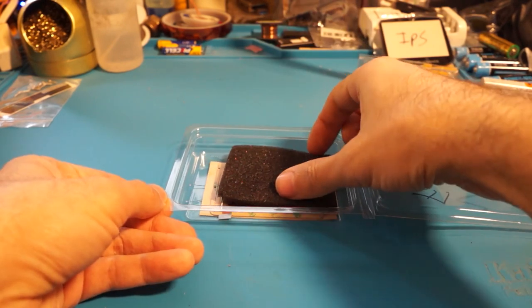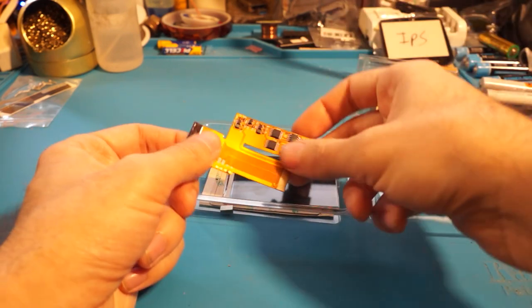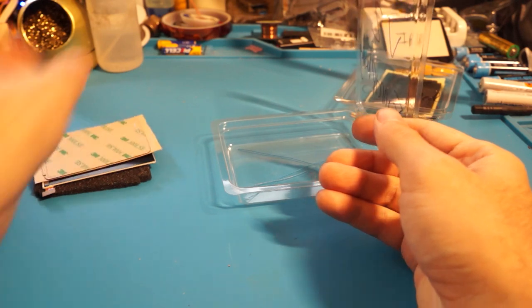To get started, we're going to take inventory of all of the kit parts. In the funny playing kit, you'll get a foam insulation pad, the IPS flex ribbon cable, the IPS panel itself, display adhesive, and some wires for soldering the brightness controls.